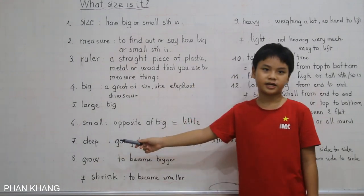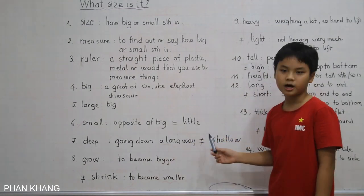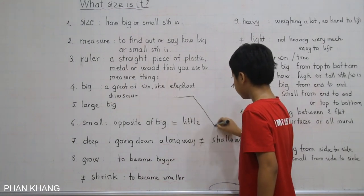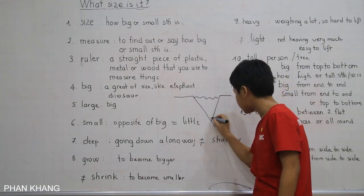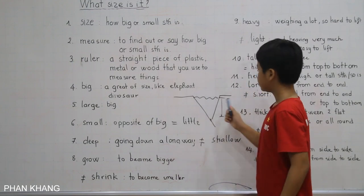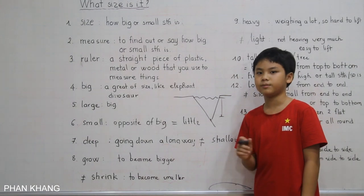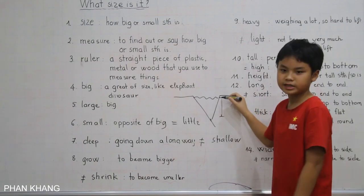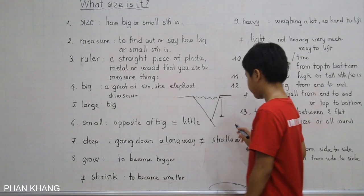Deep is an adjective. Deep means going down a long way — the opposite of shallow. For example, the Mariana Trench is very deep; it is the deepest point. We might also say the beach is very deep. So deep means going down a long way, mostly said about water.